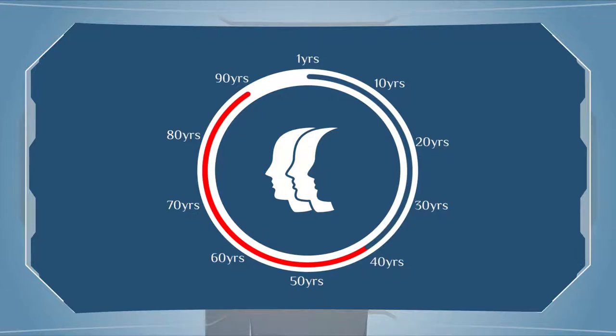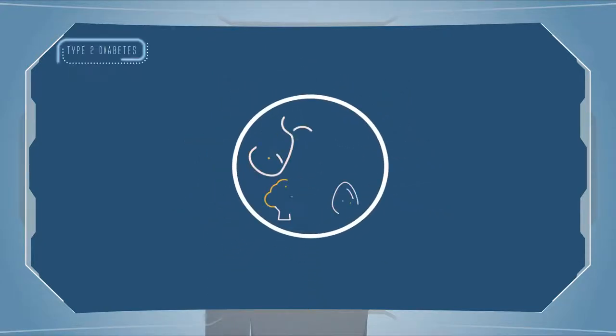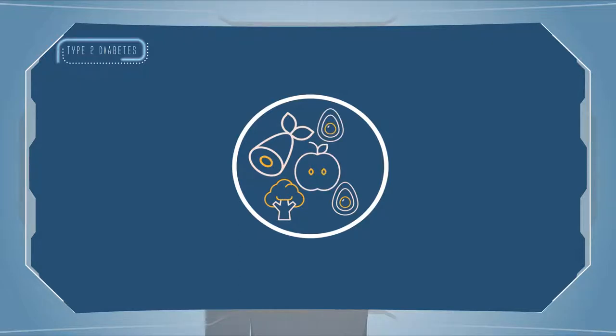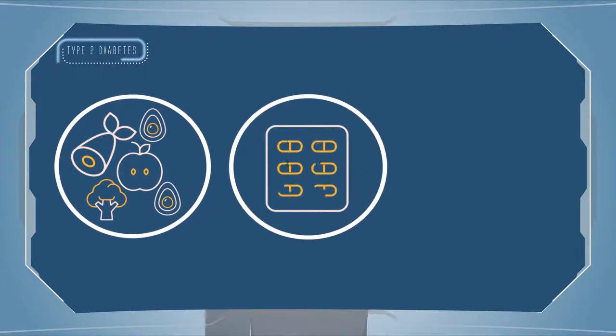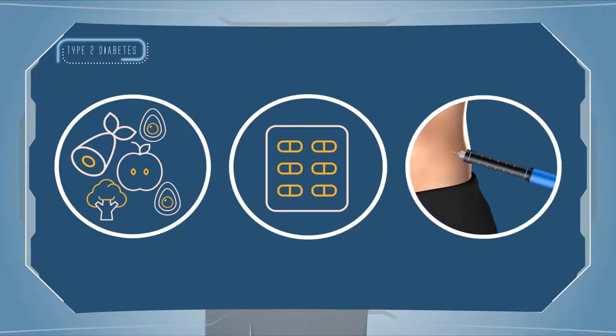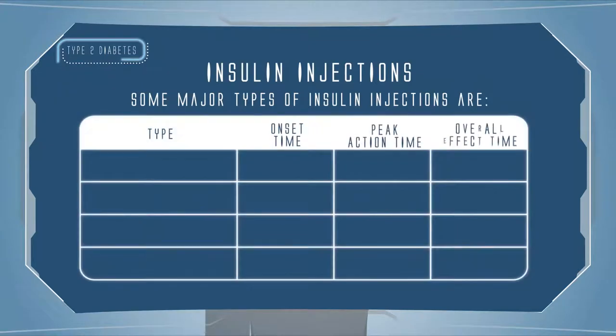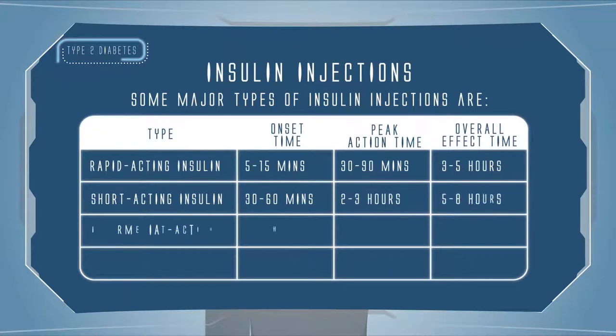Diabetes can be controlled with a healthy lifestyle like exercise and having healthy food, medication, and in some cases, by taking external insulin. Your doctor may recommend different types of insulin depending upon the severity of diabetes.